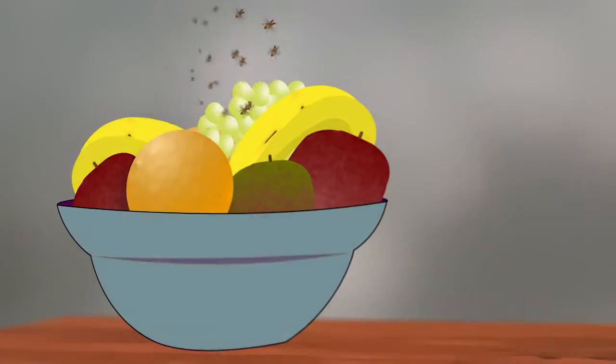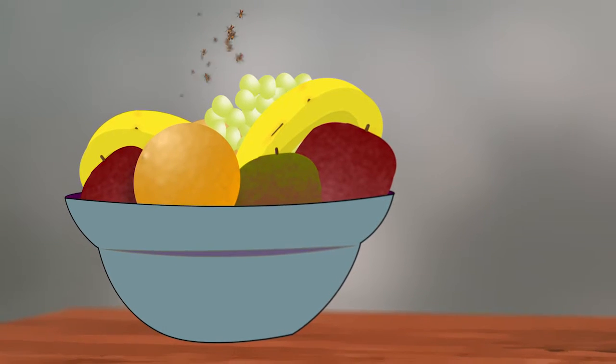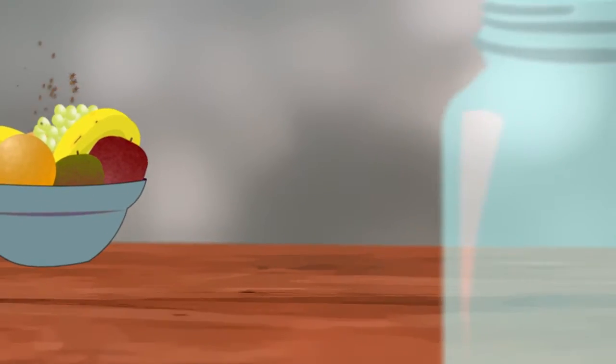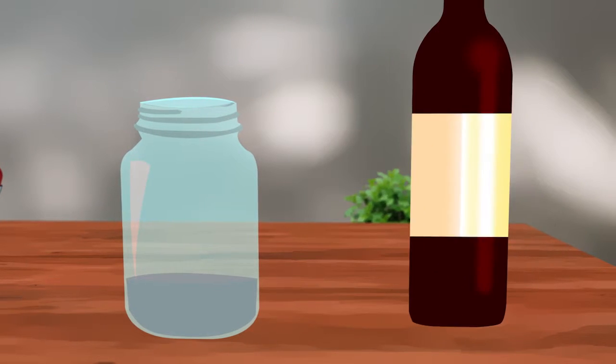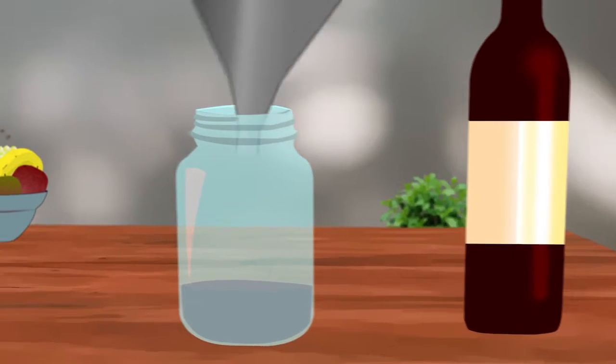So when you get those Drosophila in your kitchen, the way to trap them is you can get a jar and just put a little bit of wine or an overripe peach or something like that in the bottom of this jar and then put a funnel over the top.